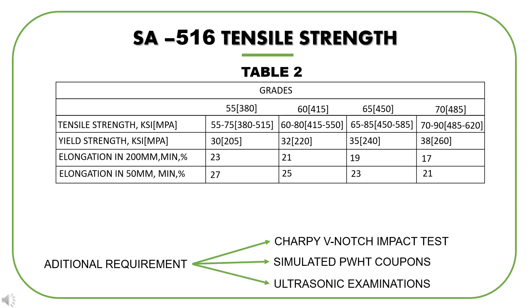So we have seen a typical material specification, and other material specifications also follow a similar format. Are you thinking about why the specification is required for material procurement? The answer is standardization. Standardization ensures that by simply knowing the specification number, a mill can produce these materials and we don't need to give them detailed material specification requirements for the purchase of material.